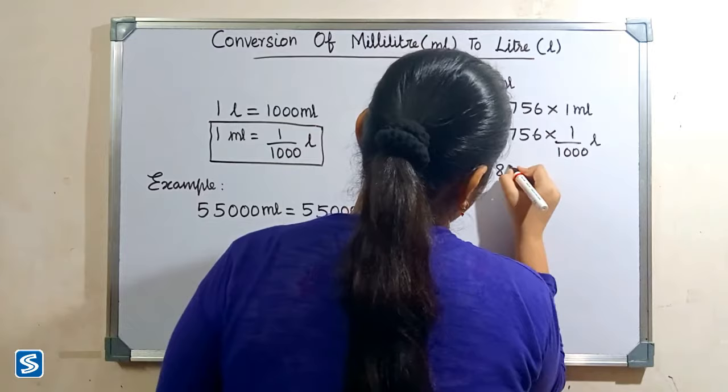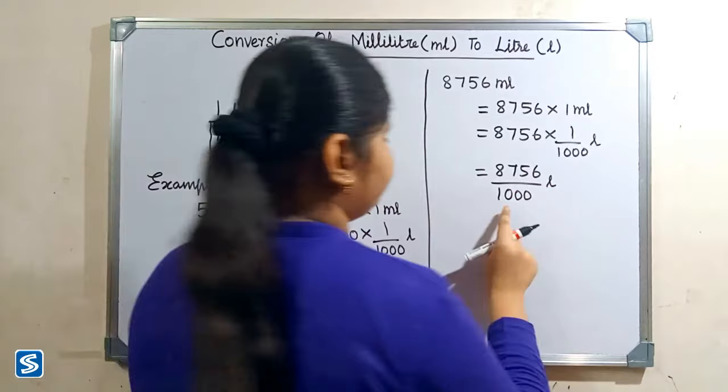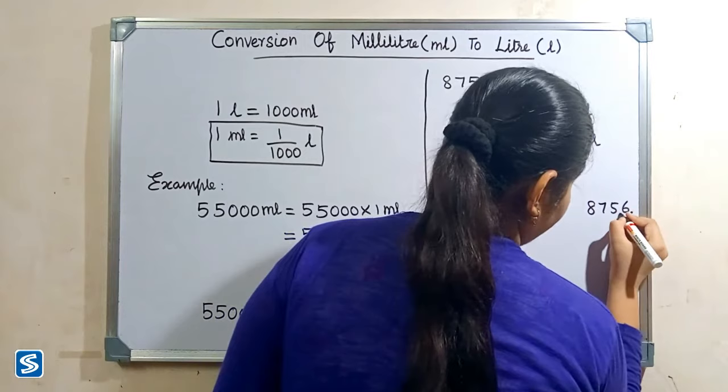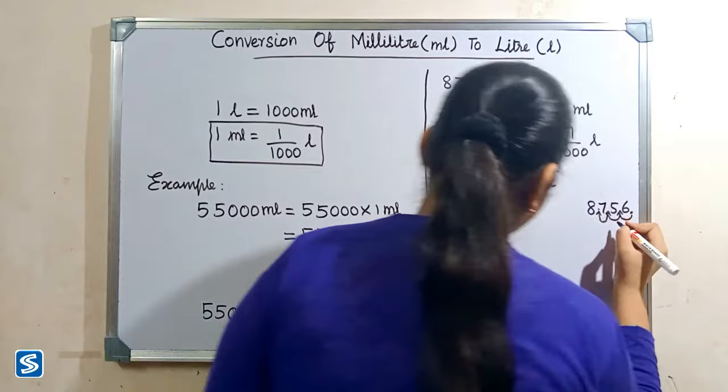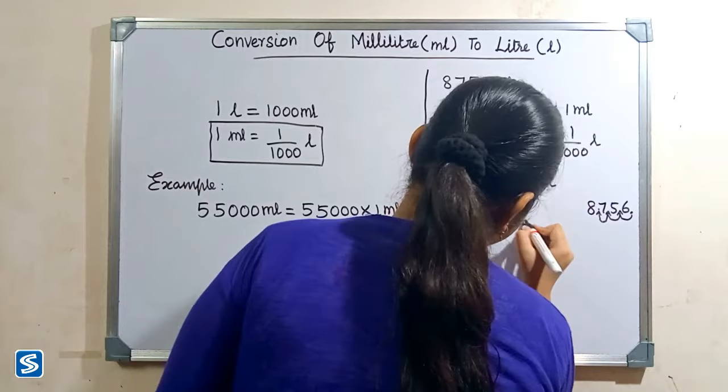So eight thousand seven hundred and fifty-six by one thousand liters. The easy way to divide by one thousand is to move the decimal point three places to the left — one, two, three. So when we divide eight thousand seven hundred and fifty-six by one thousand liters, our answer will be eight point seven five six liters.